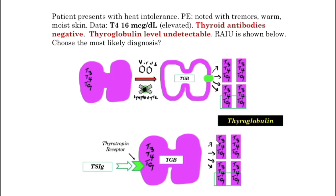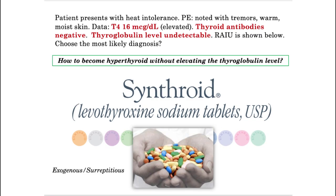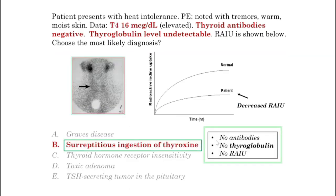Virtually every other cause of hyperthyroidism releases thyroglobulin. With thyroiditis, there's an outpouring of thyroglobulin. Graves' disease — outpouring of thyroglobulin. A toxic adenoma — outpouring of thyroglobulin. So how do you get hyperthyroid without releasing thyroglobulin? The only way to do it is exogenous use. The way you know about exogenous or surreptitious use is the thyroglobulin. No antibodies, no thyroglobulin, and no radioactive iodide uptake — because you're taking it exogenously. That's the other thing that can give you decreased uptake.